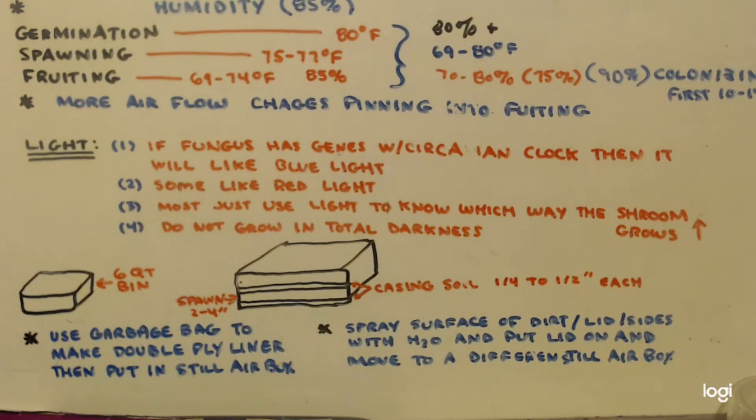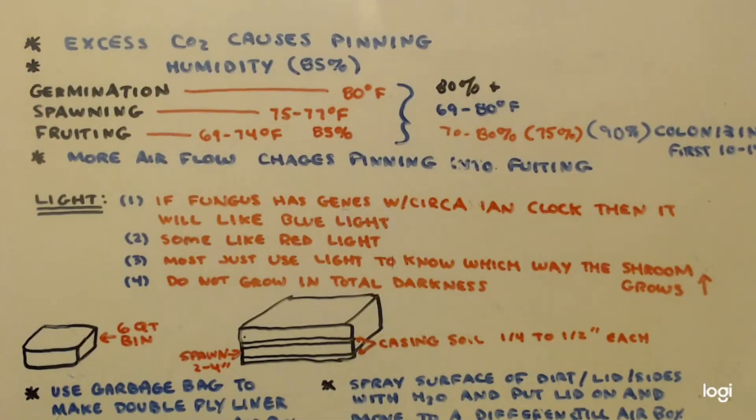What I do is I just use an incandescent light bulb, a regular light bulb, and I give them like 6 to 10 hours of light. I won't give them more than 10 hours though. That's all they really need. Now if you're growing mushrooms that have psilocybin cubensis, it really doesn't care that much about light. It doesn't have the circadian clock gene. I don't think it has a gene for the red light. Mostly it just uses light to know which way to grow. It wants the light though. You can't do it in total darkness.